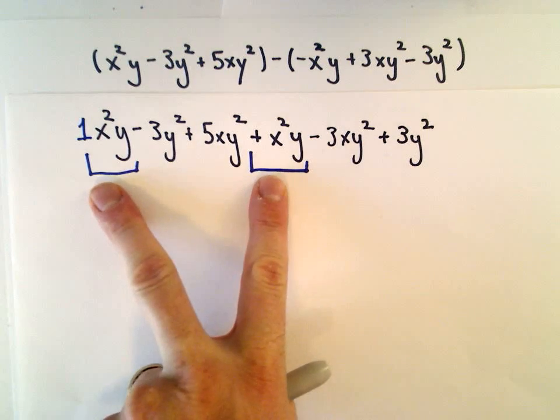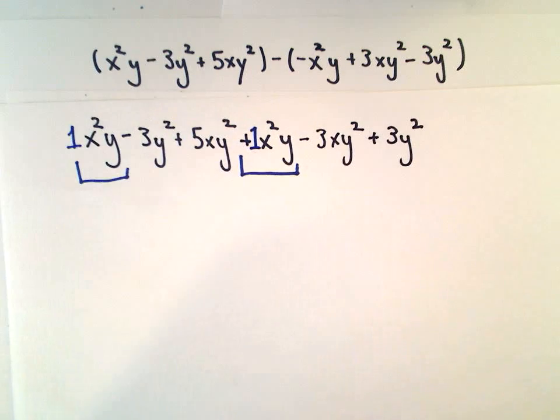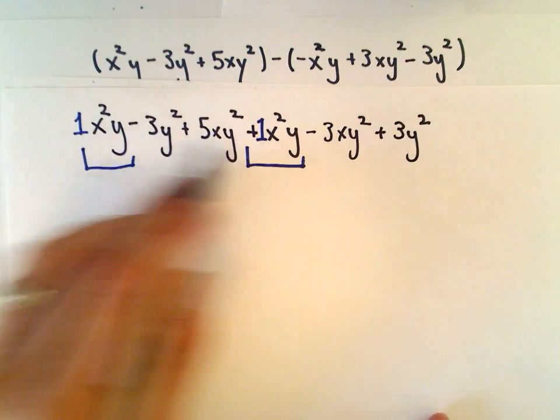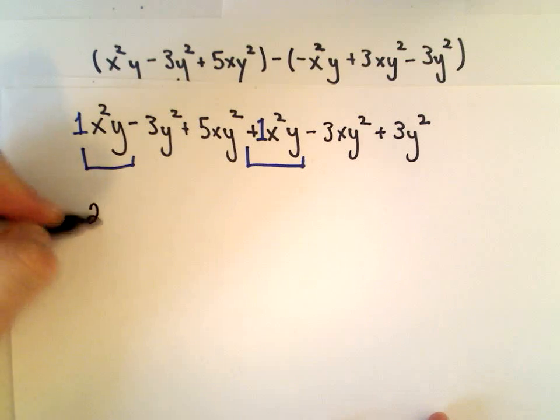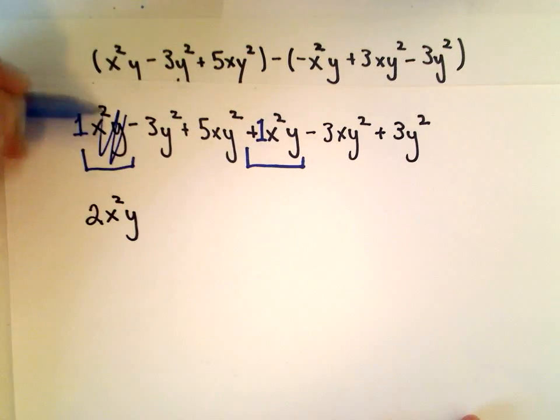And then we have an xy squared. So it looks like those are going to be my like terms that I'm going to start off combining. We have a positive one x squared y and a positive one x squared y. If we add those together, we just do the arithmetic on the coefficients. We'll have 2 x squared y. That takes care of those.